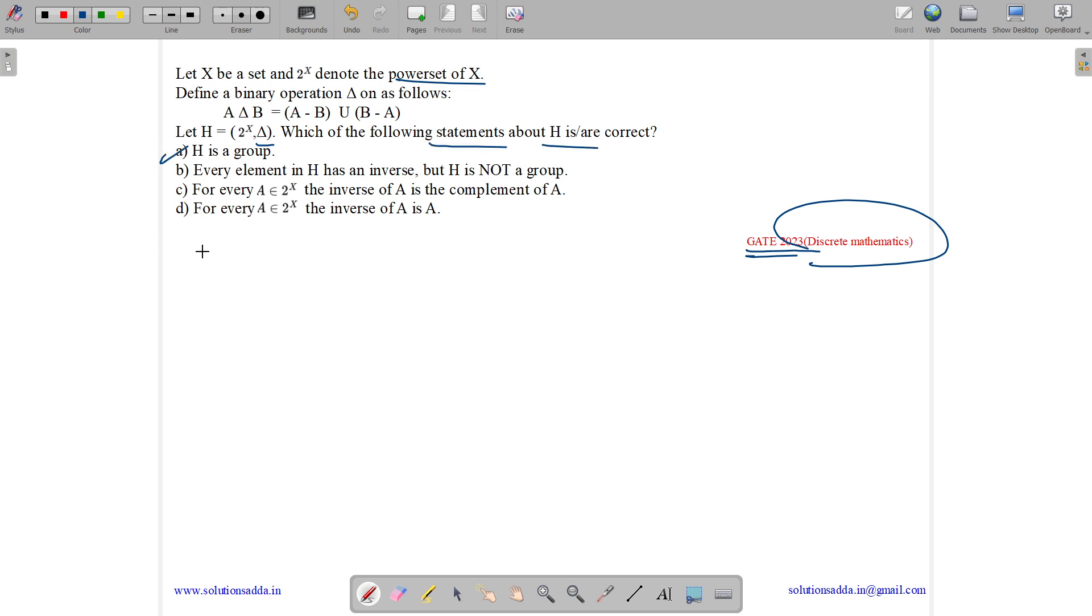Option A: H is a group. Option B: Every element of H has an inverse but H is not a group. Option C: For every element A belongs to 2 to the power X, the inverse of A is the complement of A. Option D: For every A belongs to 2 to the power X, the inverse of A is A.